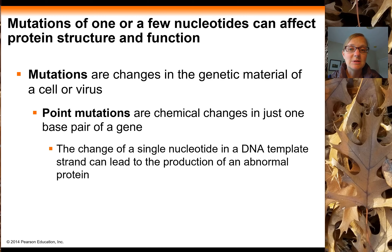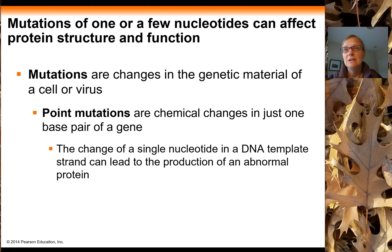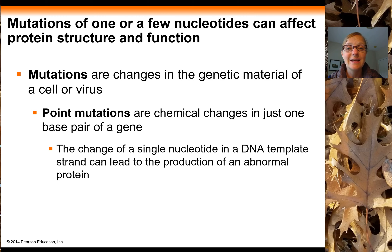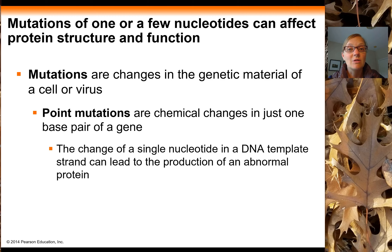By definition, mutations are changes in the genetic material of a cell or even a virus. The simplest mutations are point mutations, where you have just a single nucleotide change — changing an A to T or a T to G in just one position. Even that single nucleotide change can lead to proteins that are completely abnormal: shorter than they should be, nonsensical, or with just a single amino acid substitution like in sickle cell, causing disease because the protein doesn't fold properly.